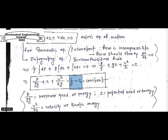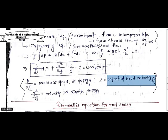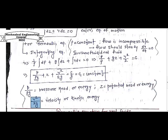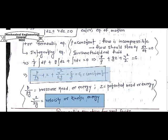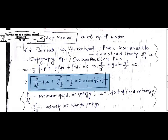Here P by rho g is the pressure head or pressure energy, z is the potential head or potential energy, and v squared by 2g is the velocity head or kinetic energy.